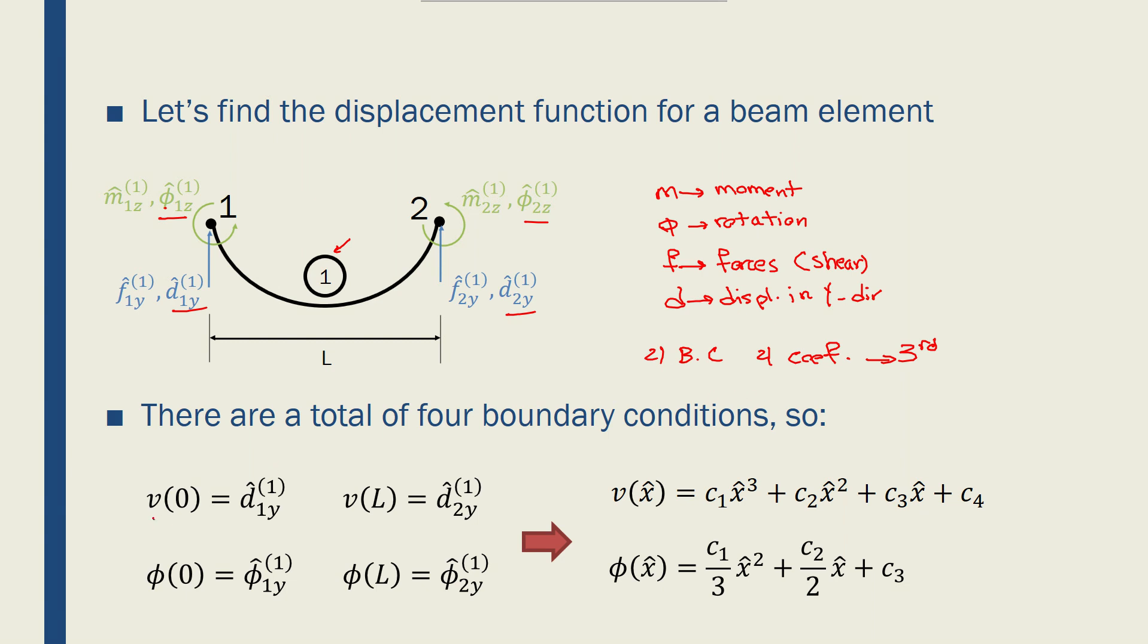So again, the boundary conditions are like this: V at X equals 0 is D1Y1, phi at X equals 0 is phi1Y1, and then V at L, which is the length of the element, is D2Y1, and phi at L is equal to phi2Y1.